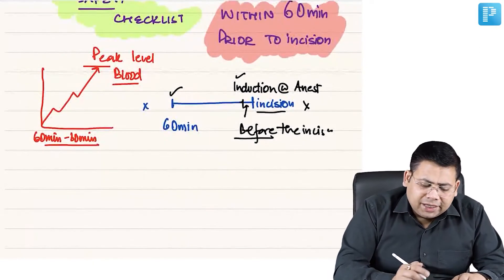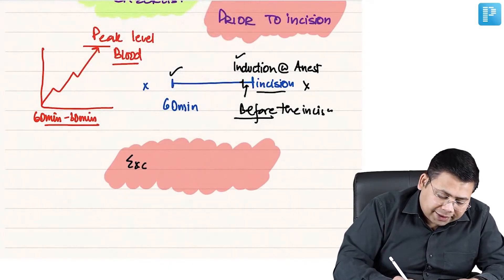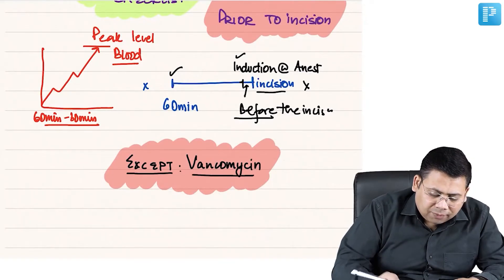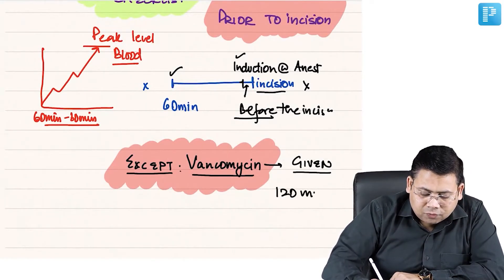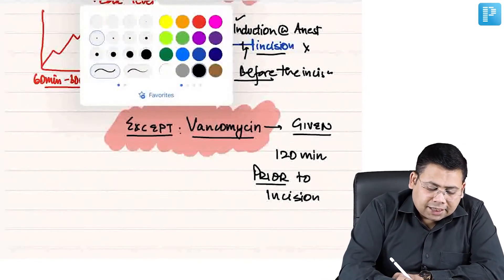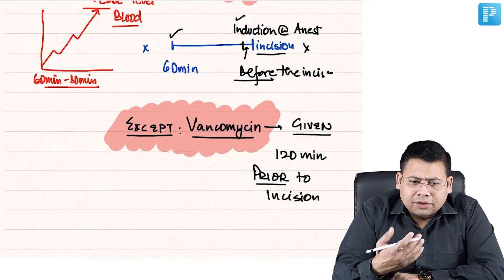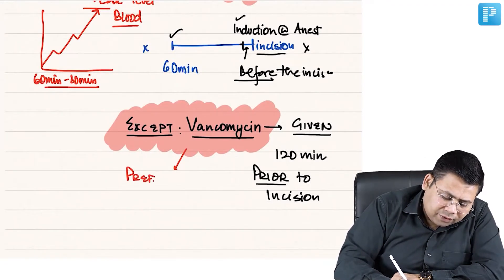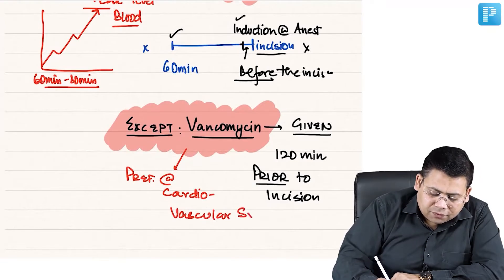The only exception to this rule is vancomycin. Vancomycin is a slow-acting drug and is given 120 minutes prior to incision. It is preferred for cardiothoracic and vascular surgeries — for example, mitral valve replacement — where MRSA is a significant threat.